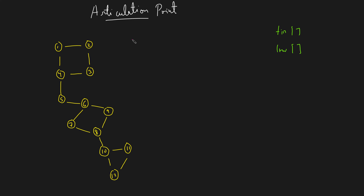In this video we will be learning about articulation points. An articulation point is a node on whose removal the graph is broken down into two or more components. In the previous video we discussed how to find bridges in a graph, where we used the concept of time of insertion and low time — we will also be using the same concept here.